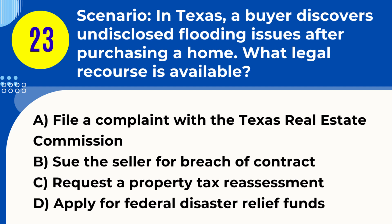Question 23. Scenario: In Texas, a buyer discovers undisclosed flooding issues after purchasing a home. What legal recourse is available? A. File a complaint with the Texas Real Estate Commission. B. Sue the seller for breach of contract. C. Request a property tax reassessment. D. Apply for federal disaster relief funds. Answer: B. Sue the seller for breach of contract. Explanation: If a buyer in Texas discovers undisclosed flooding issues after a purchase, they may have legal recourse to sue the seller for breach of contract or nondisclosure, depending on the circumstances.